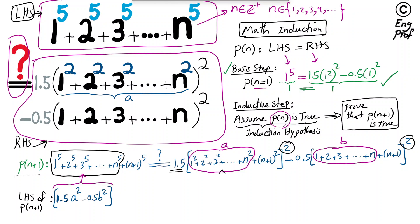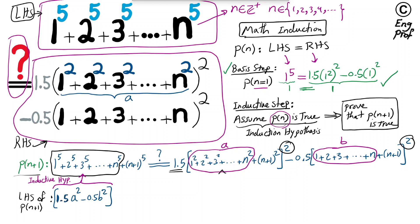By the induction hypothesis, 1.5·A² minus 0.5·B² exactly matches what we assumed — that P(n) is true — meaning these two expressions are equal. That leaves us with the remaining task: proving the extra terms equal (n+1)⁵.